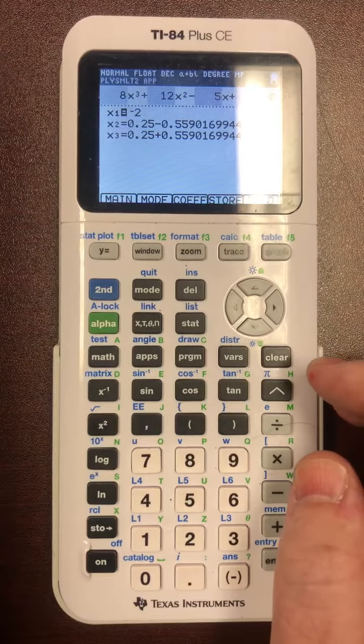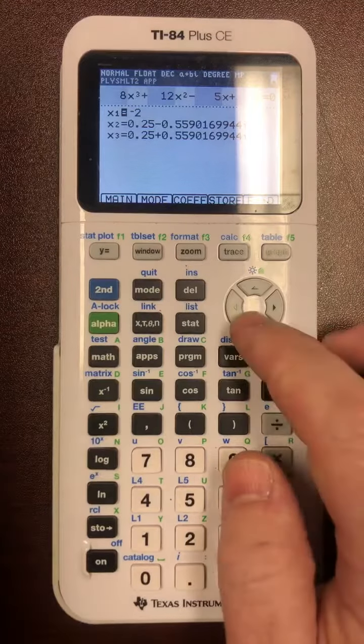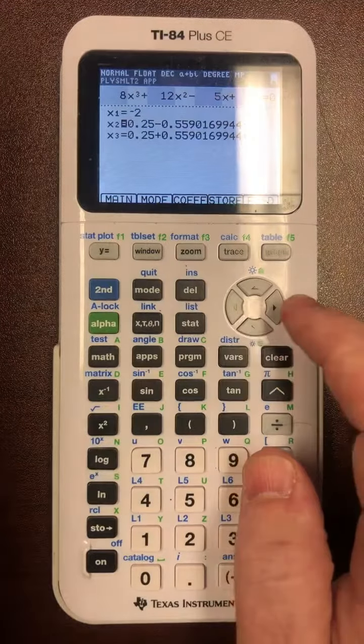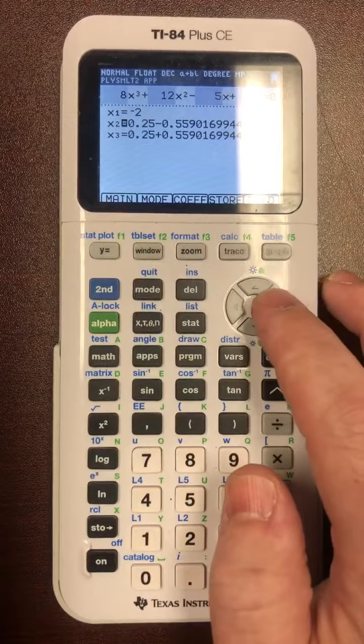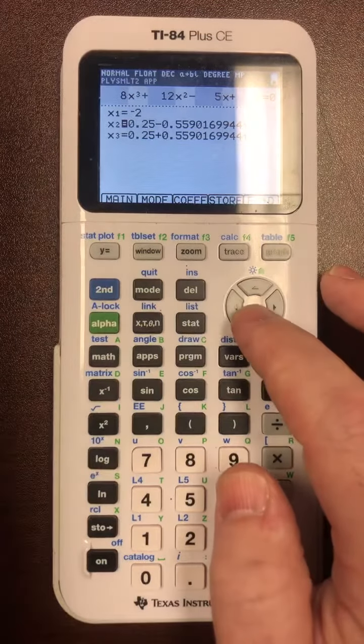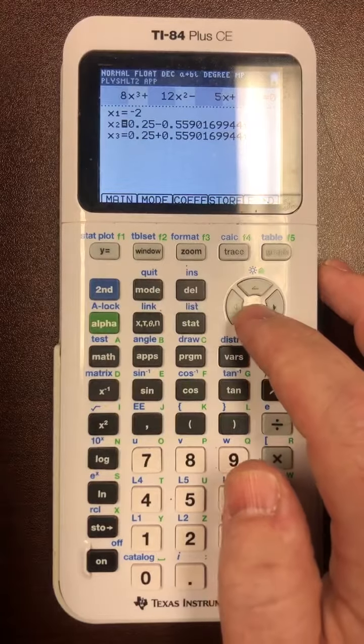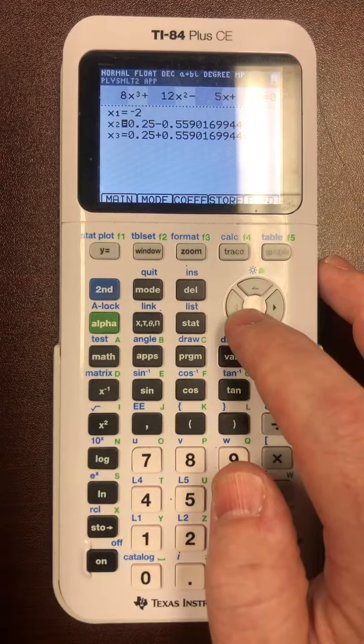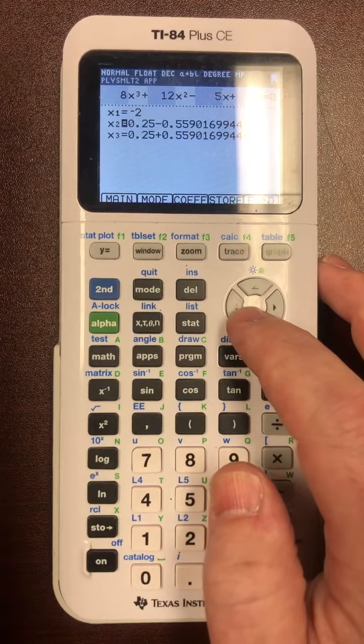Now you'll notice negative 2, there it is, they gave us that one. And the other two solutions are imaginary numbers. It's one-fourth plus and minus that big nasty decimal that contains an I. So therefore the solution in the book would be E, both of them are complex numbers that are not real.